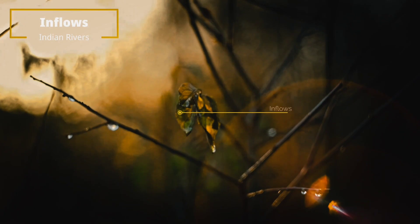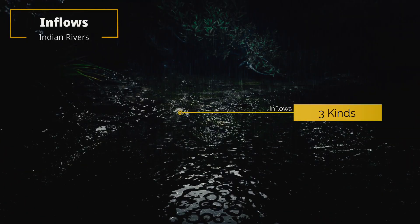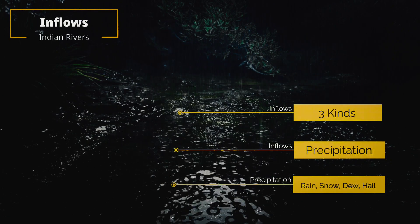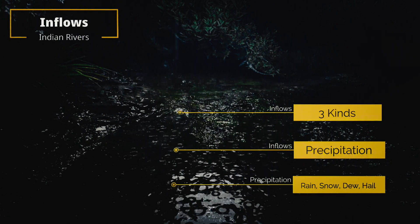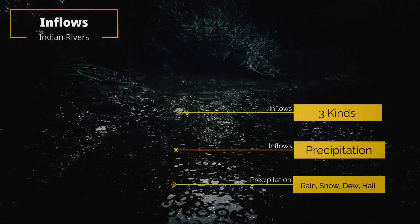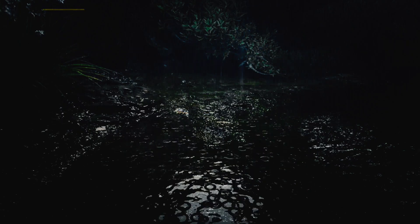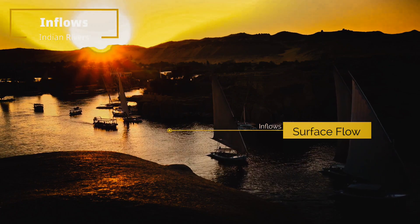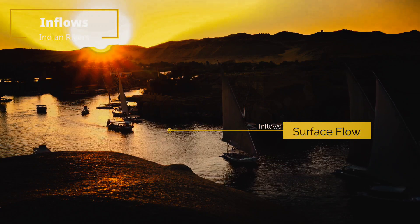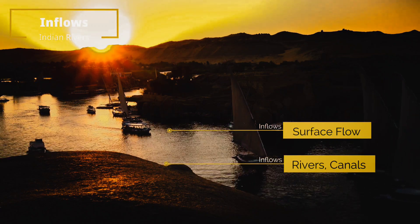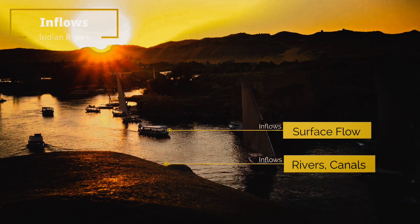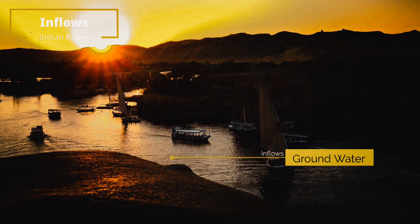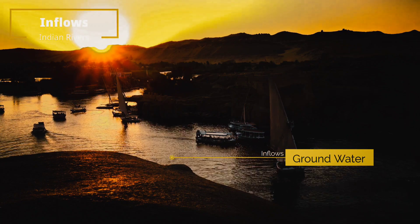There are three kinds of inflows. 1. Precipitation — it contains rain, snow, dew, and hail. 2. Water also reaches an area by surface flow, such as rivers and canals. 3. Groundwater. In this way, we can calculate how much water is coming to an area in different ways.